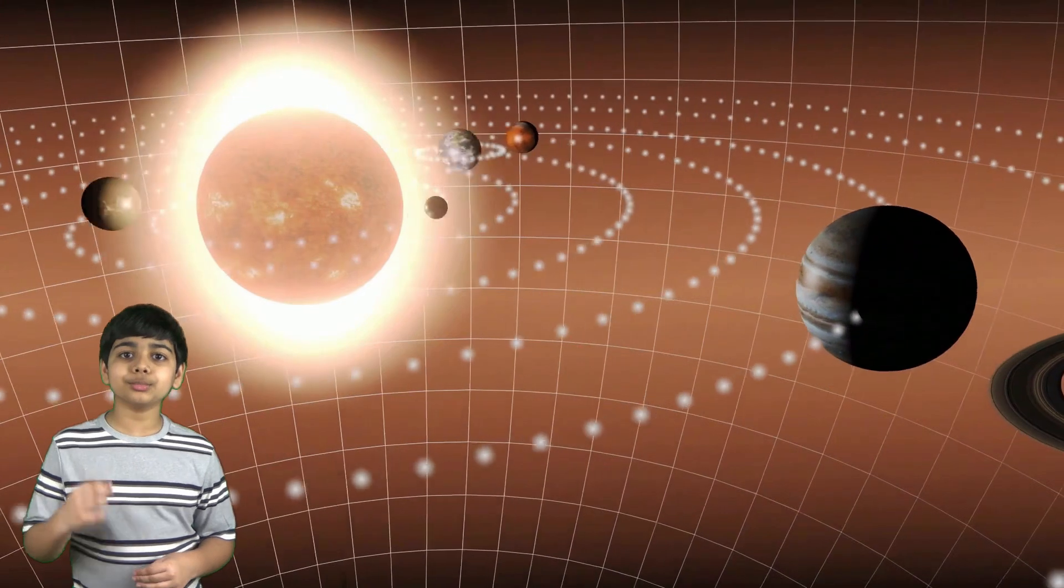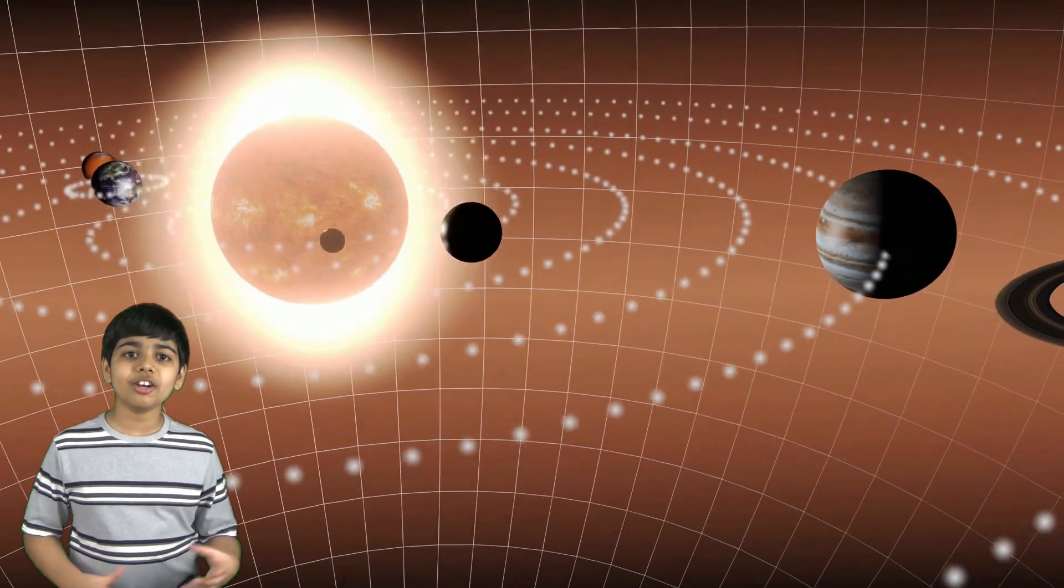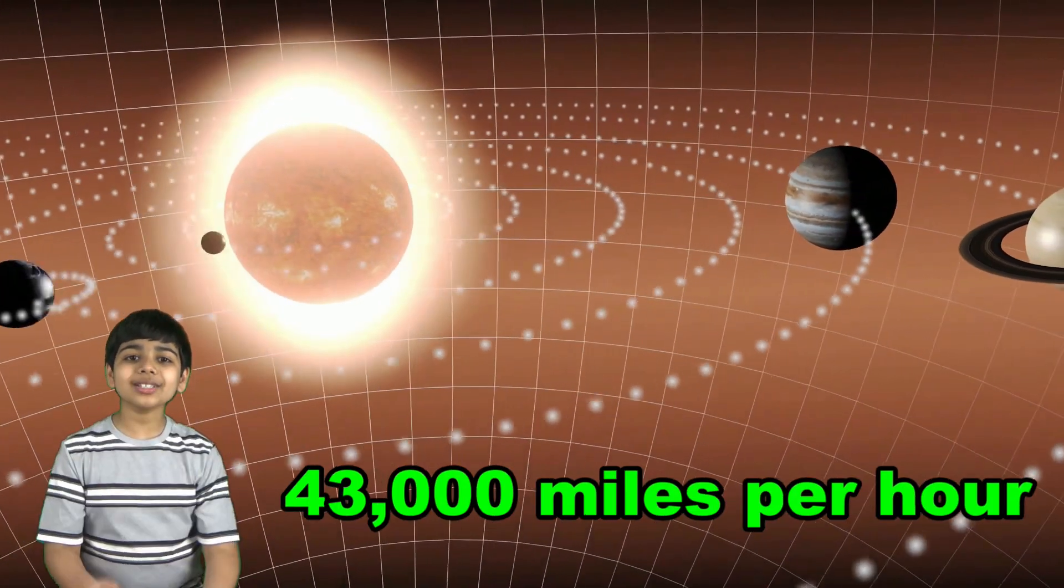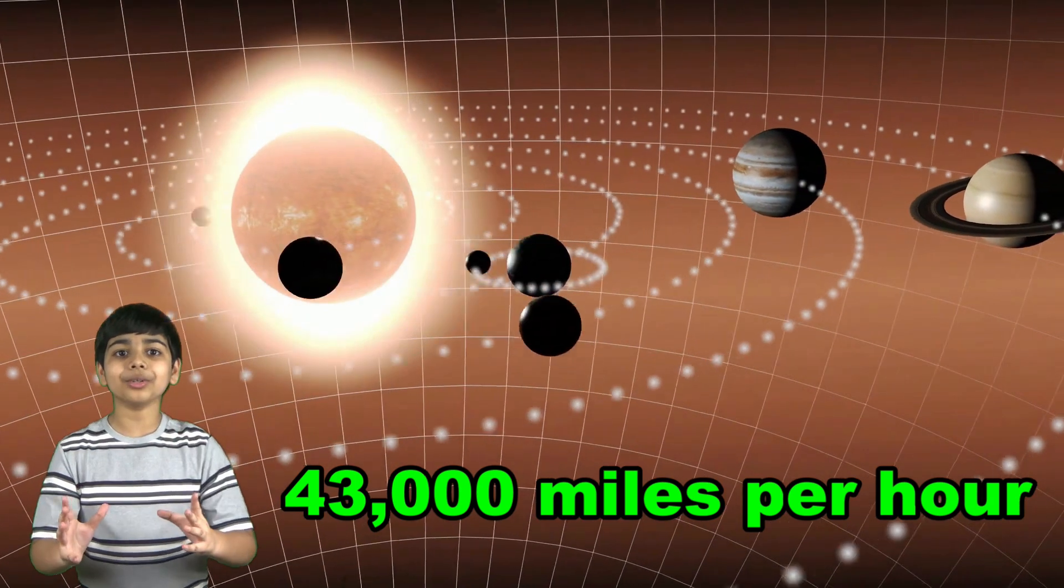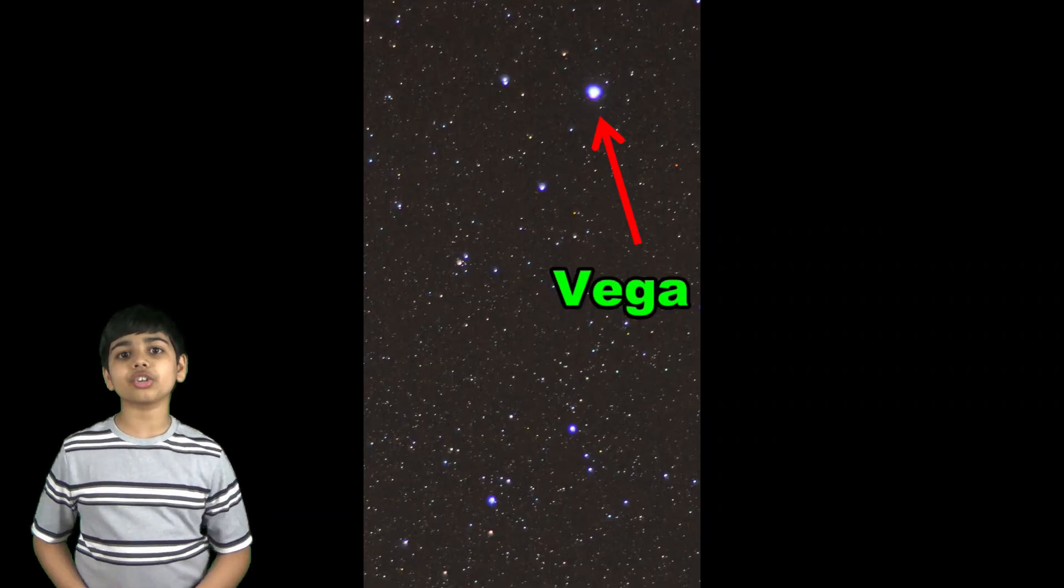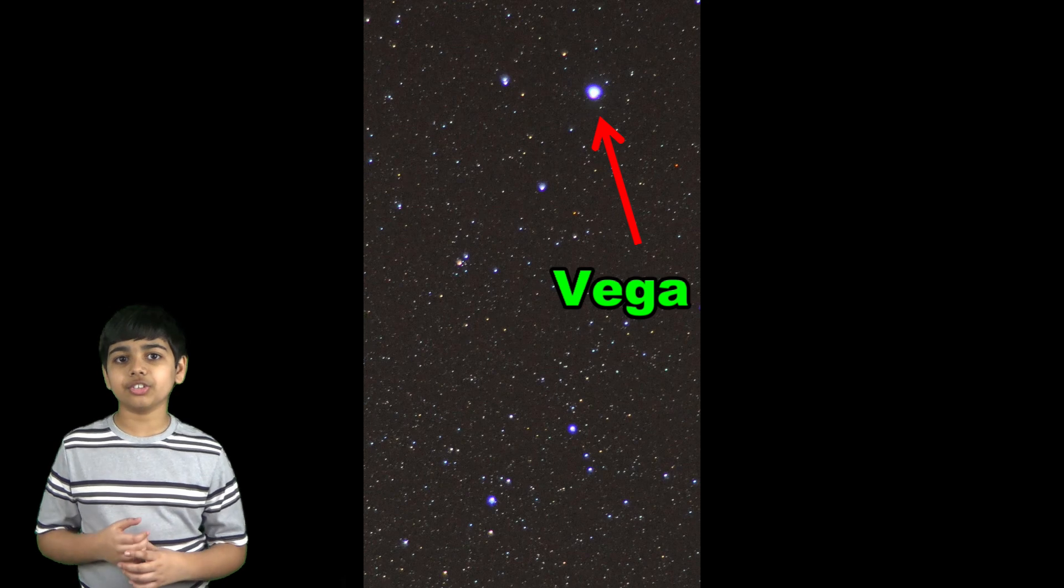Our solar system is moving at a relative speed of roughly 43,000 miles an hour in the direction of the bright star Vega in the constellation of Lyra.